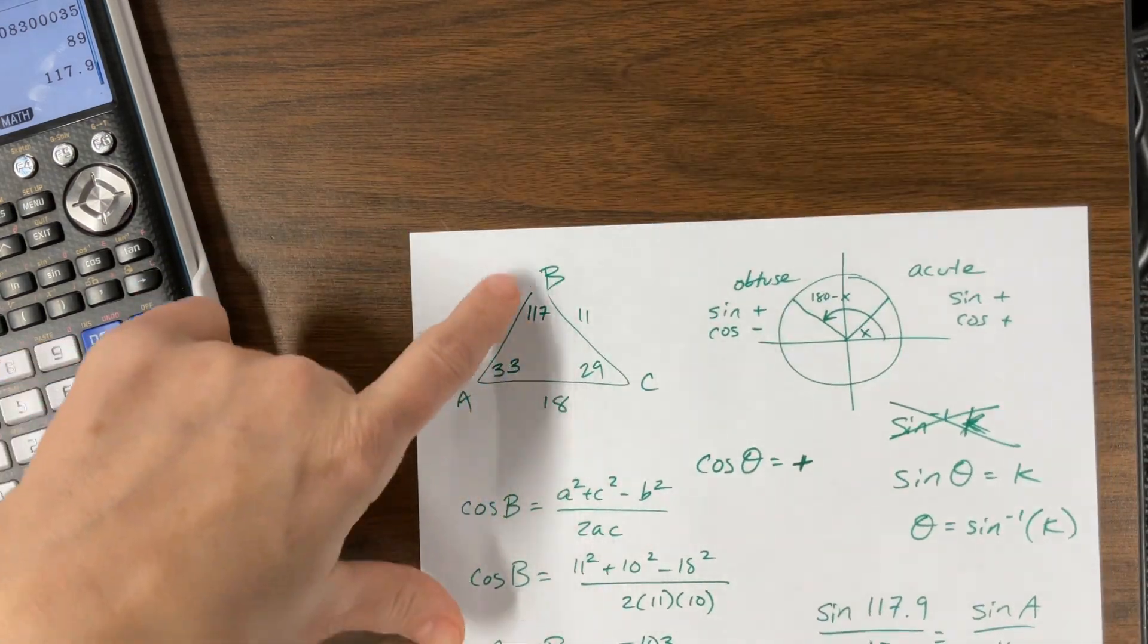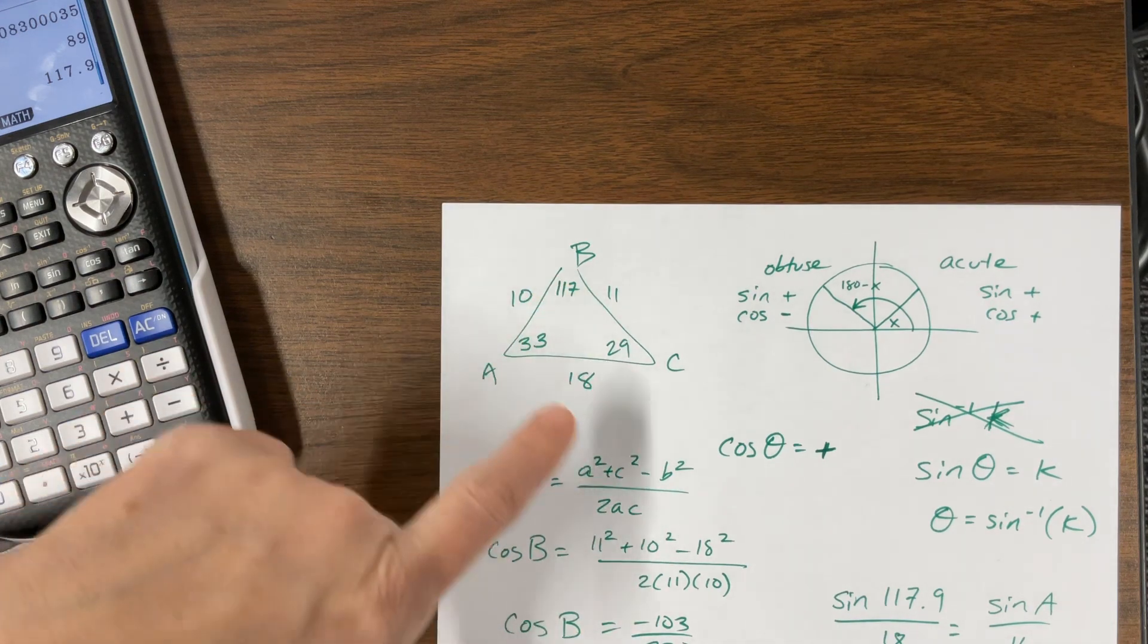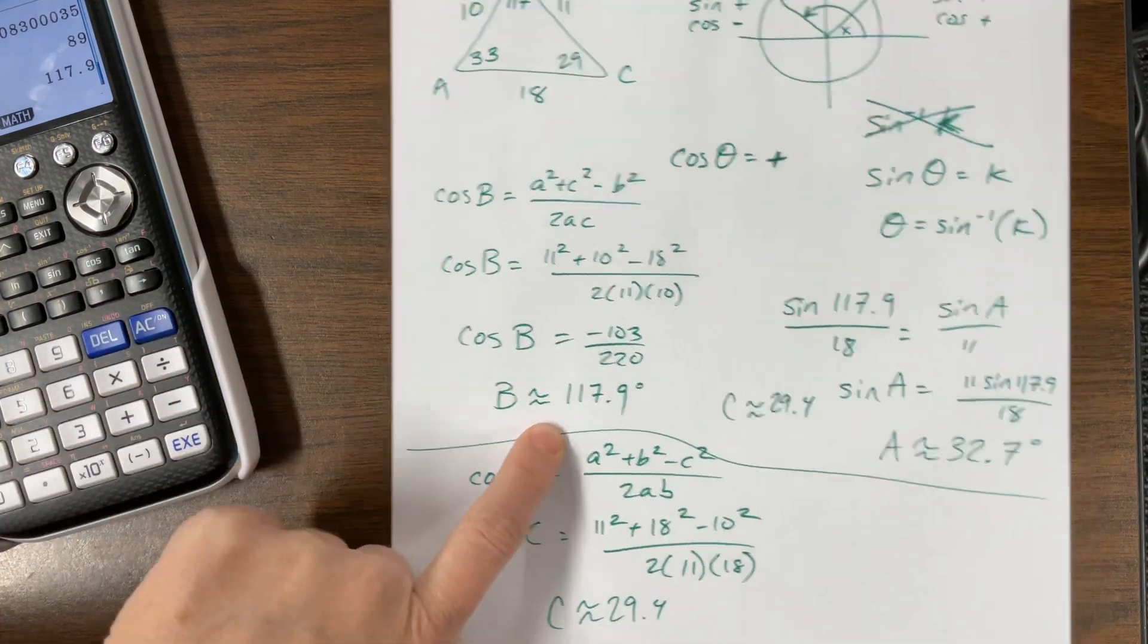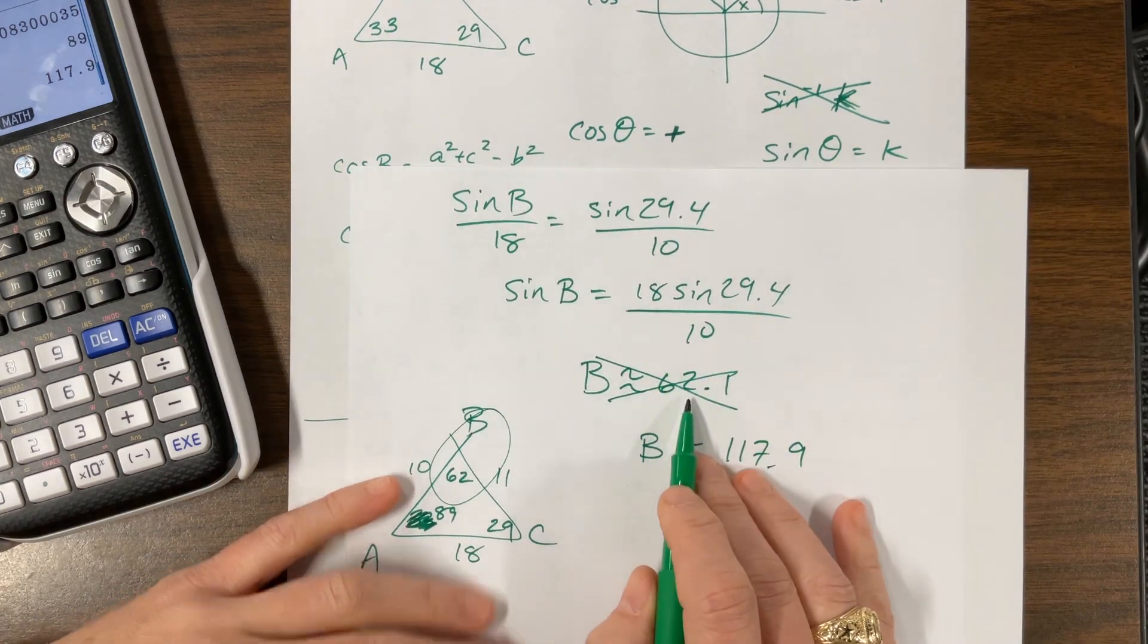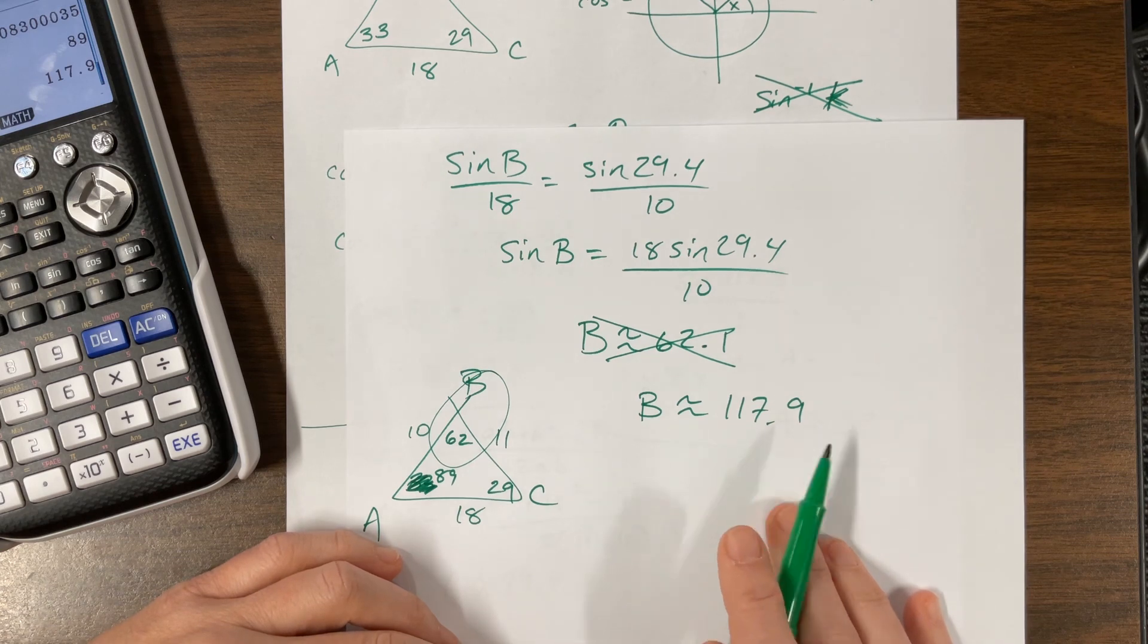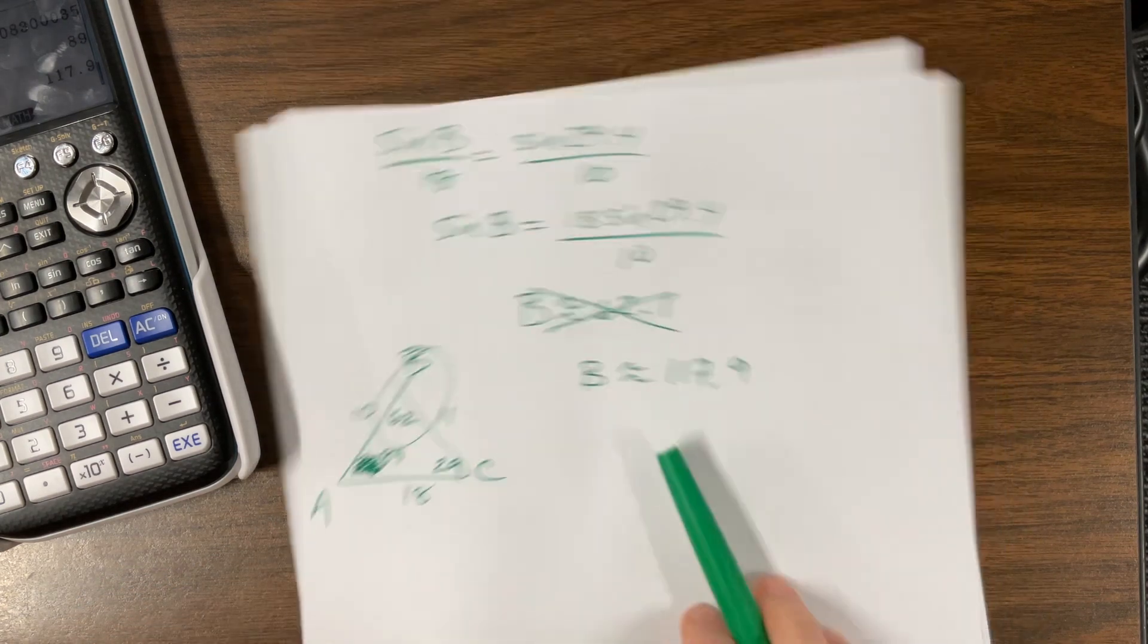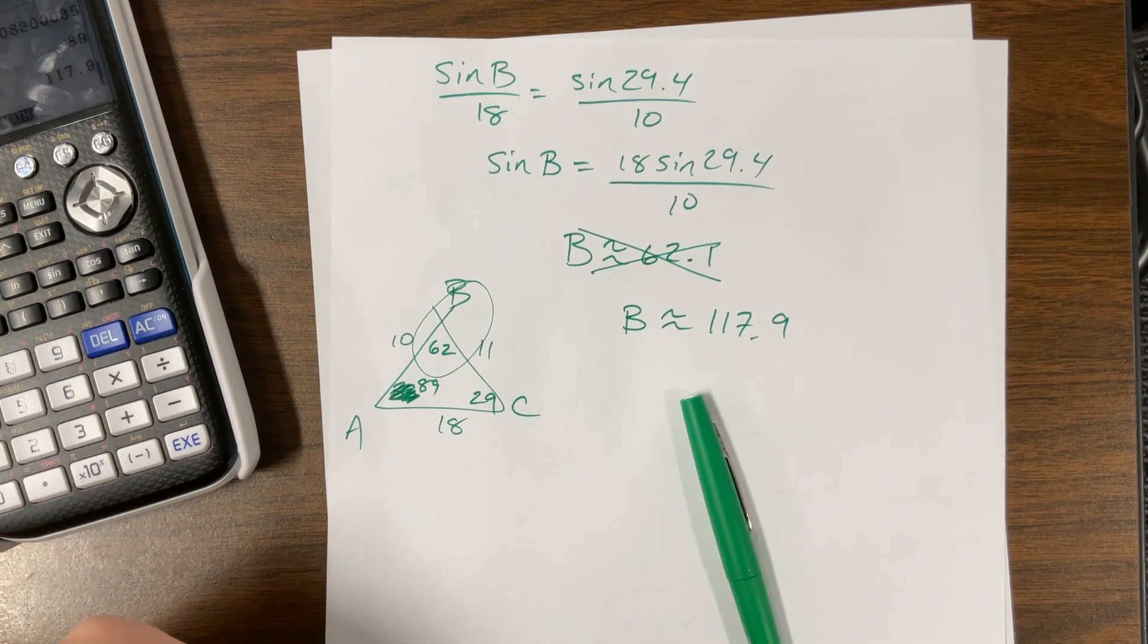So in summary, find the largest angle first, if they give you side, side, side. Always find the largest angle. Find the one that could be obtuse using the law of cosine, because the law of cosine will find an obtuse answer, whereas the law of sine would not. You would get something, the law of sine would have given you this acute answer, and you'd have to know to take its supplement. I hope that was helpful. I do know this is not on the AP test, but I still think it's important. So good luck. Go study. It's on my test. All right. Work hard. Practice. Let me know if you have any questions.